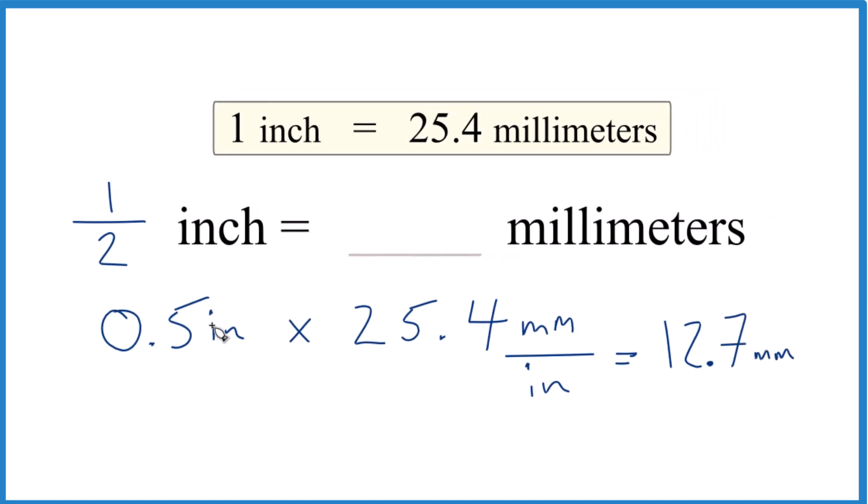We know we did it right because we have inches on the top and the bottom—they cancel out. We're left with millimeters, so we did that correctly. In answer to our question, one-half of an inch is equal to 12.7 millimeters. This is Dr. B. Thanks for watching.